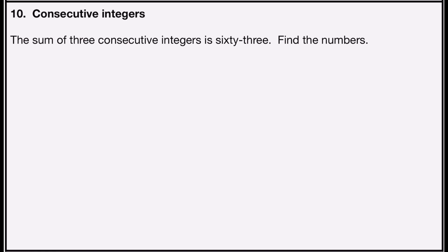Problem number 10 is consecutive integers. It says the sum of three consecutive integers is 63. Find the numbers. Consecutive means one right after the other, and if they're consecutive integers, they're all one apart. So my first number is x. The second number will be one away from that, so x plus one. The third number will be one away from the second, or x plus one plus another one — one plus one is two — so x plus two.